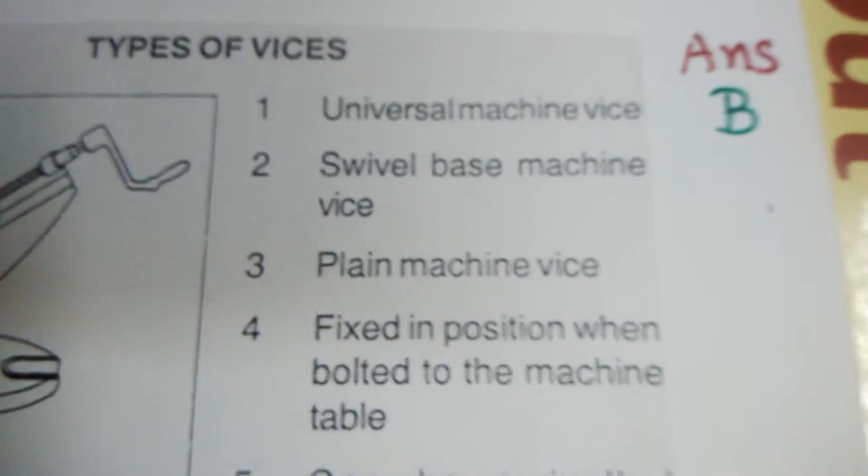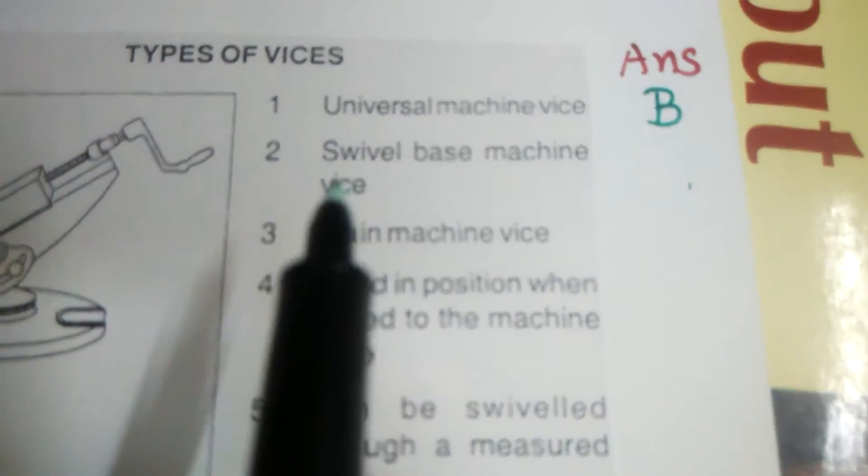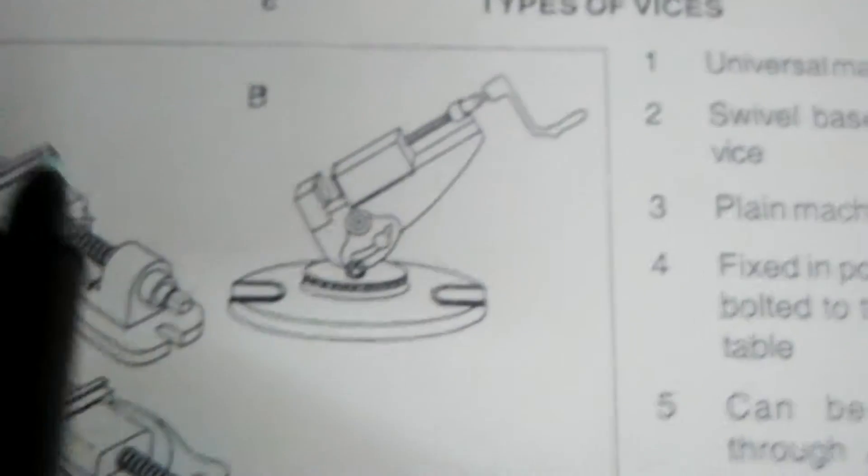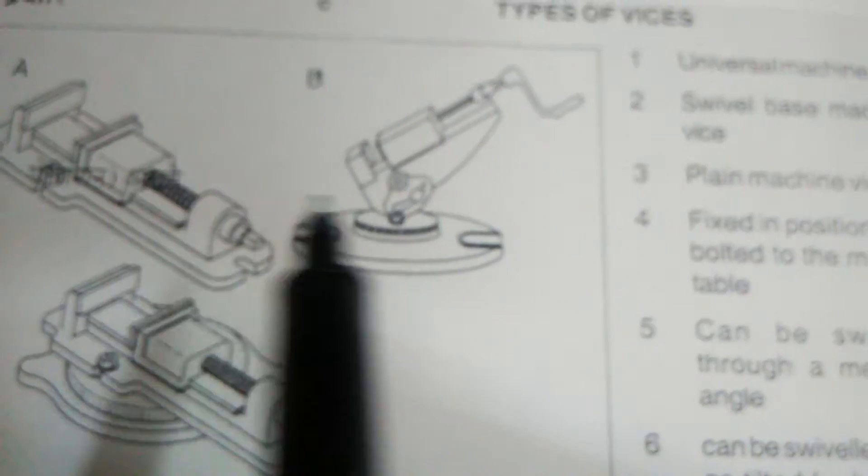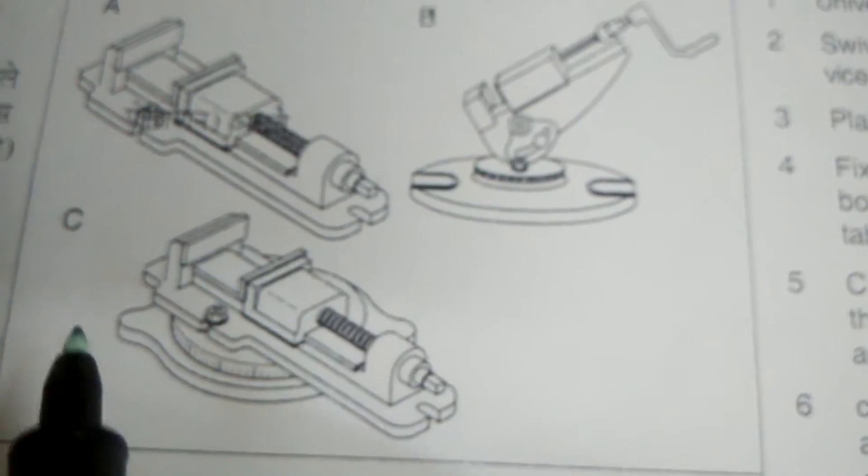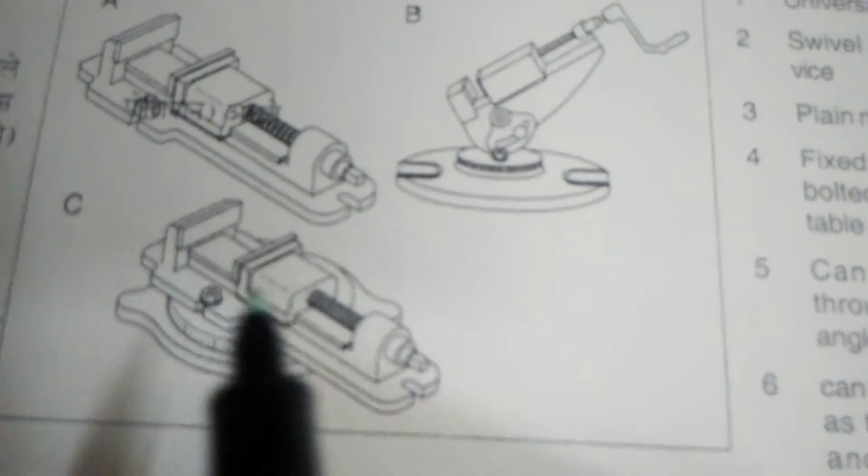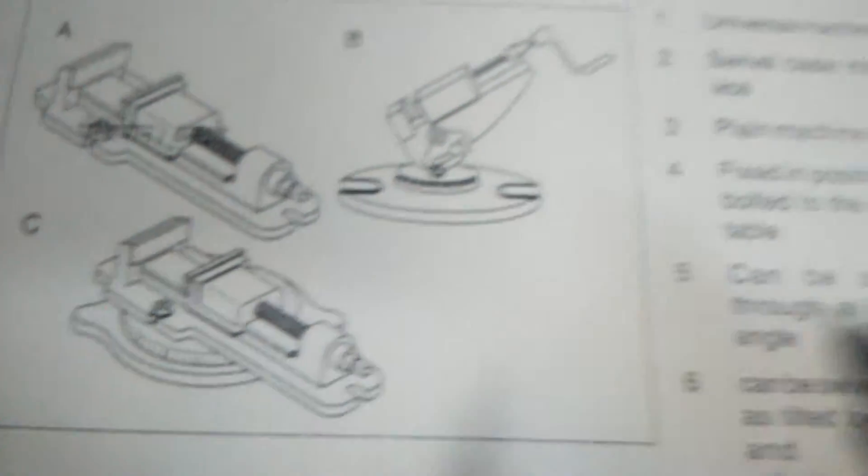Second question: Swivel-based Machine Vice. In this diagram, which is Swivel-based Machine Vice? C is the Swivel-based Machine Vice. Then write down here, C.